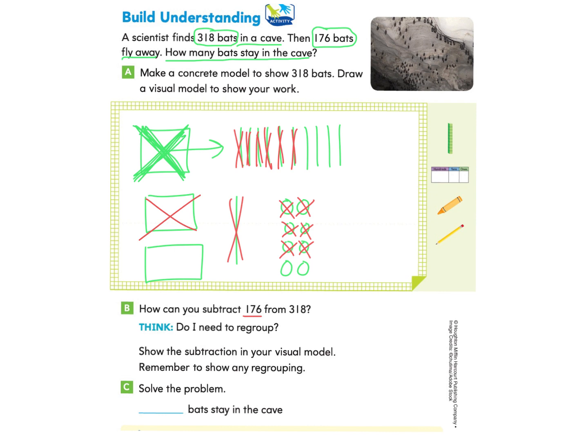Now what we have left is we have 100, we have four tens, and we have two ones. So we are going to solve the problem and say that we have 100, four tens, or 40, and two ones. So 142 bats stay in the cave.